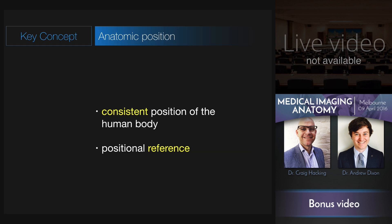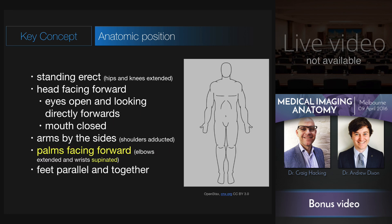The first concept is that of the anatomic position. This is a consistent position of the human body, and we need it to be able to describe where things are, where pathology is, where pathology extends, and it's pretty much international. The anatomic position is just as this diagram depicts: a patient standing erect with the hips and knees extended, the head facing forwards with eyes open and looking directly forwards, and the mouth is closed. The arms are held by the sides — in other words the shoulders are abducted — and the palms are facing forwards. The feet are parallel and together.